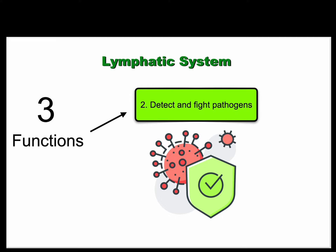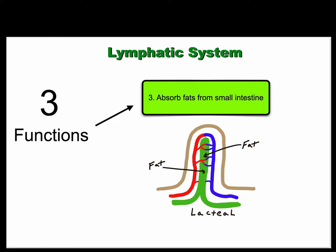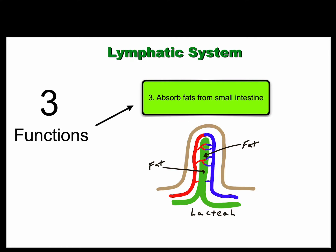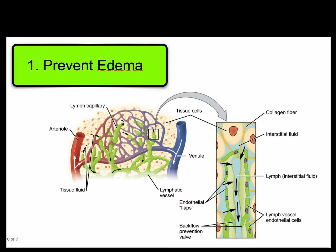The third major function of the lymphatic system is to absorb fats from the small intestine. There are specialized structures called lacteals which are very specialized parts of the lymphatic system, and we'll talk more about what is happening there.